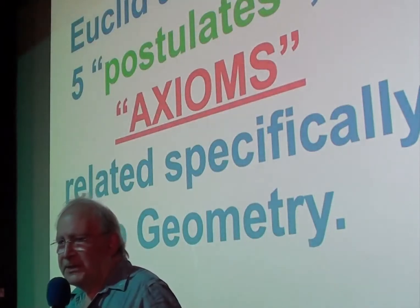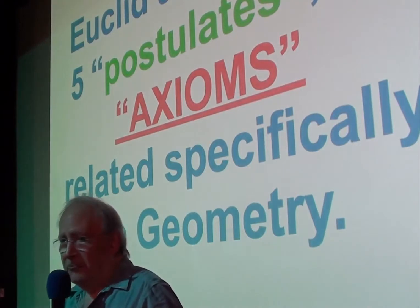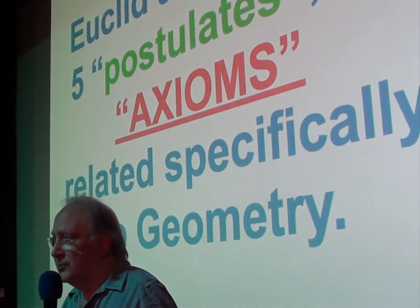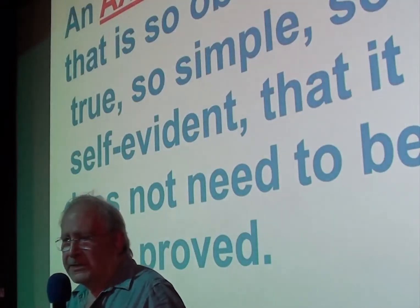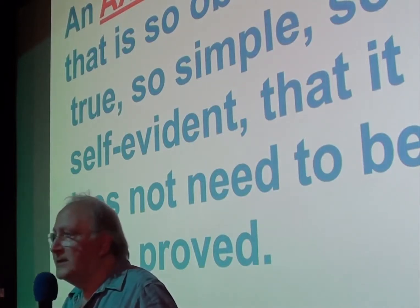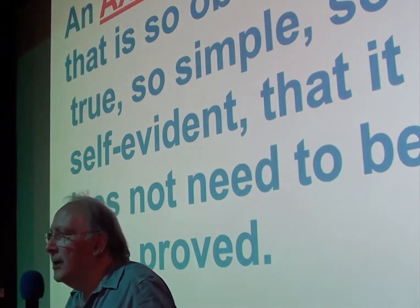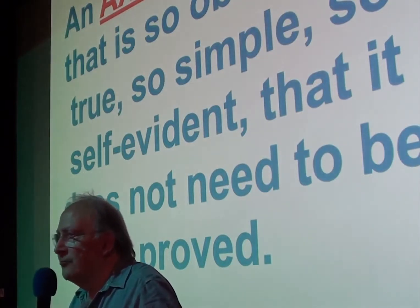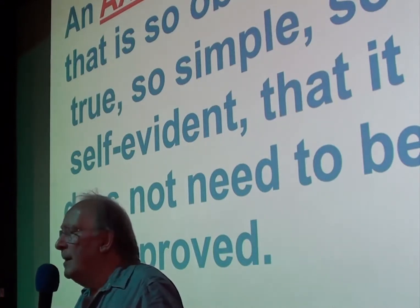Euclid also stated five postulates, or axioms, related specifically to geometry. What is an axiom? An axiom is a truth that is so obviously true, so simple, so self-evident, that it doesn't need to be proved. Because if you're proving things, you've got to start from somewhere that you don't need to prove. Something that's so obvious, that it doesn't need proving.